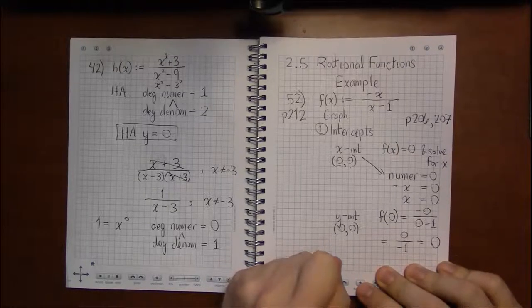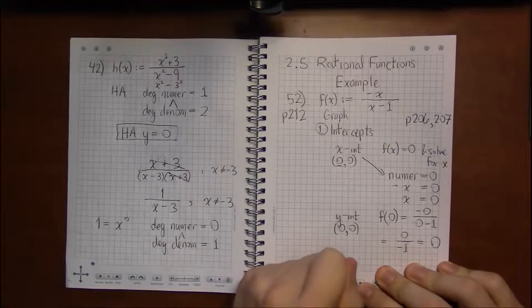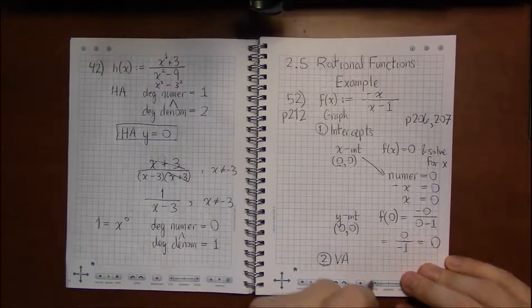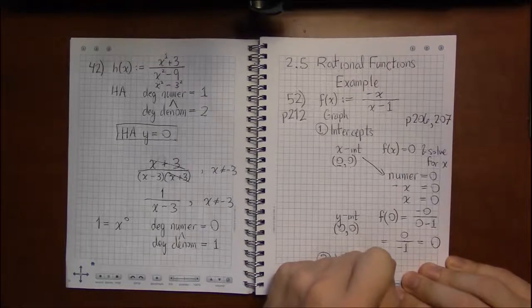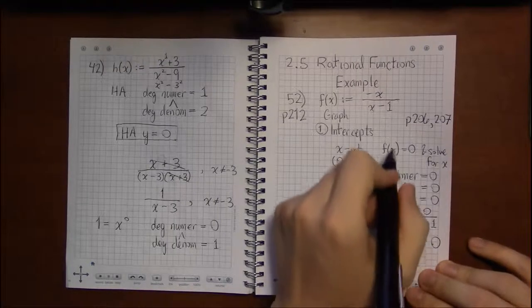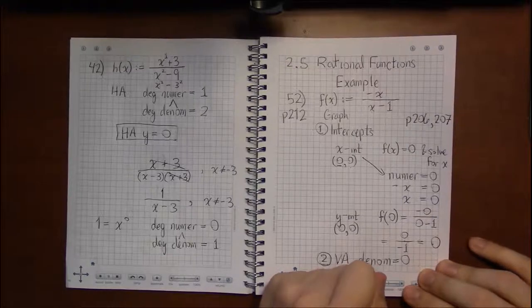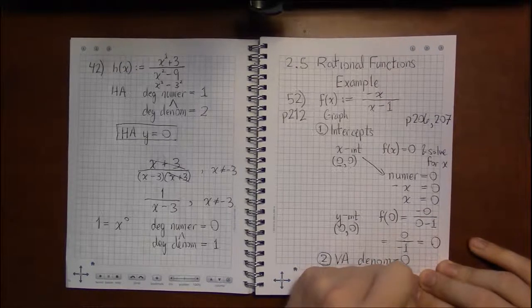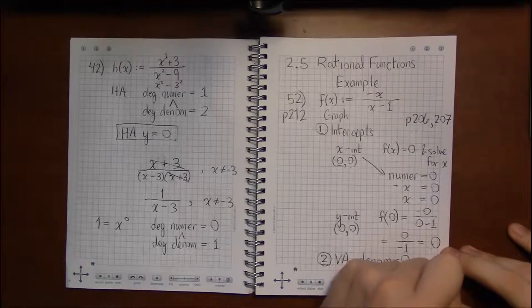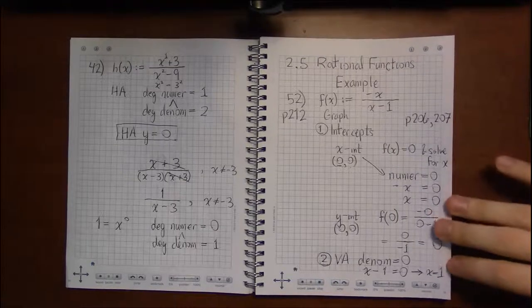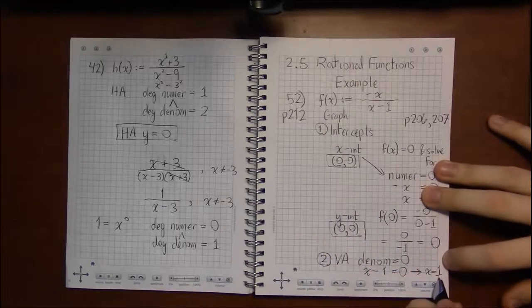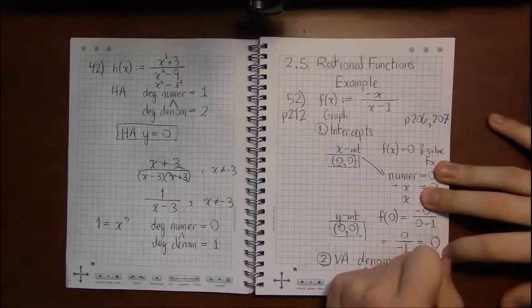Next up, we're told to find any and all vertical asymptotes. And as we saw a few videos back, the vertical asymptotes occur when the denominator is equal to 0. So in our case, the denominator, the bottom part, x-1 is 0 when x equals 1. So these are the intercepts, this is the vertical asymptote.